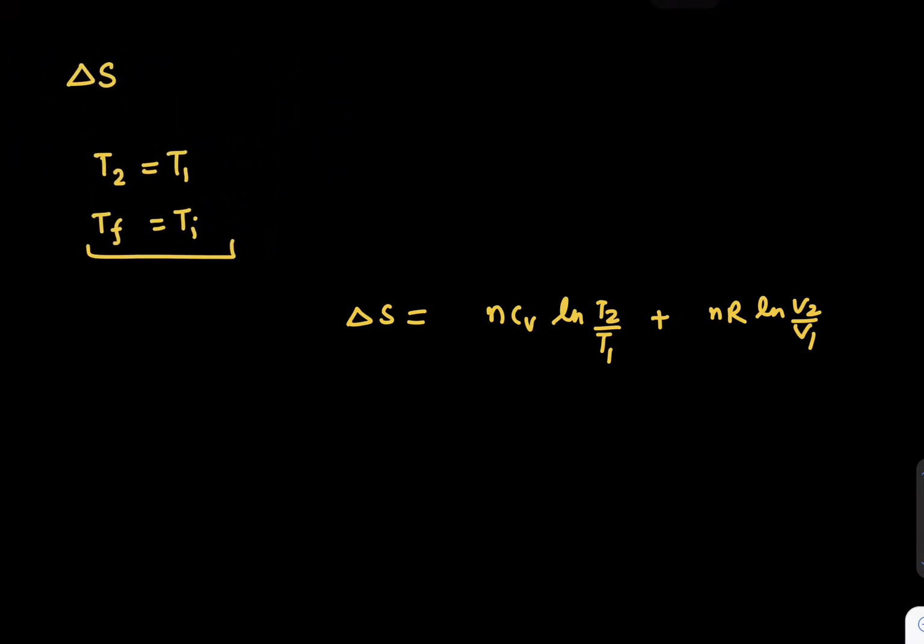We can say ΔS is integral dq upon T, and dq is du plus p dv upon T. If you put the values, du is Cv dT plus p dv upon T. If you put everything in integration and put the limits T₁ to T₂, Cv dT upon T will become Cv ln(T₂/T₁).